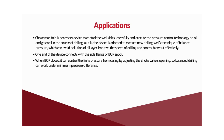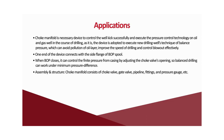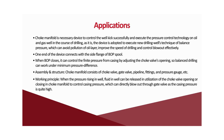Assembly and structure. The choke manifold consists of choke valve, gate valve, pipeline, fittings, and pressure gauge. Working principle: when the pressure rises in the well, fluid in the well can be released by utilizing the choke valve opening or closing in the choke manifold to control casing pressure, which can directly blow out through the gate valve when the casing pressure is quite high.